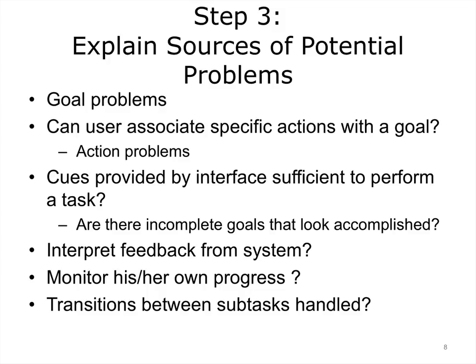The third phase is to explain the sources of potential problems. For example, does the system provide sufficient feedback after every action, or are there potential sources of confusion? Are the transitions between subtasks abrupt and confusing, or are they handled gracefully, keeping the user informed? It's also helpful to draw on Nielsen's principles to organize one's findings of potential problems.